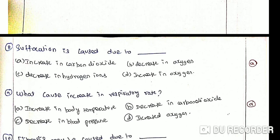Asphyxiation is caused due to: Option A, increase in carbon dioxide; Option B, decrease in oxygen; Option C, decrease in hydrogen ions; Option D, increase in oxygen. The correct answer is option A, increase in carbon dioxide.